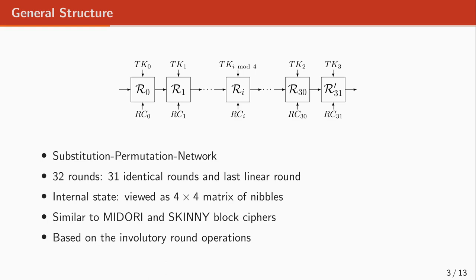Its general structure is a substitution-permutation network. It has 32 rounds, where the first 31 rounds up to key and constant additions are identical. The last round is all linear and does not add any security to the cipher. Its reason for being there is to make it possible to have the same structure for decryption as for encryption.